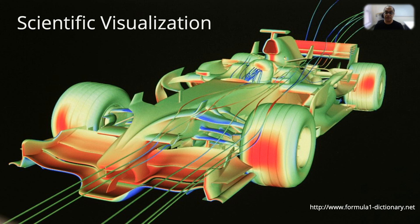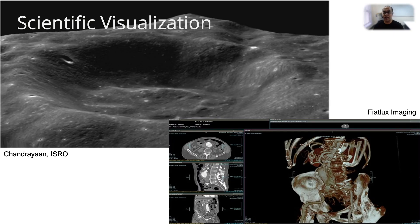Graphics is used for scientific visualization. Here is a visualization of air flow on top of a Formula One car. Here we have more visualizations of data returned from India's Chandrayaan satellite — you get a visualization of the surface of the moon. Then we have a 3D reconstruction of the hip bone complex from sliced image data.